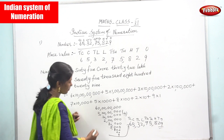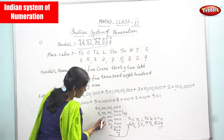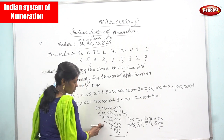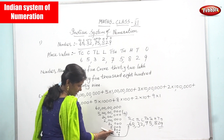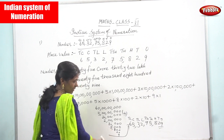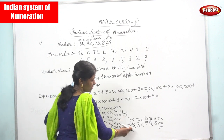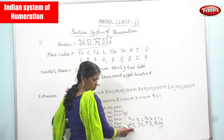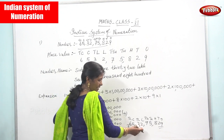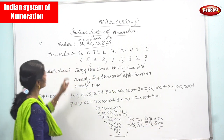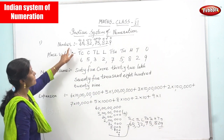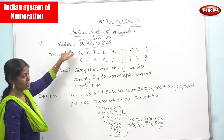60 crore plus 5 crores is 65 crore, plus 30 lakhs plus 2 lakhs is 32 lakhs, plus 70,000 plus 5,000 plus 800 plus 20 plus 9 gives 75,829. So 65 crore 32 lakhs 75,829 — that is the question, and the expansion form is exactly right.